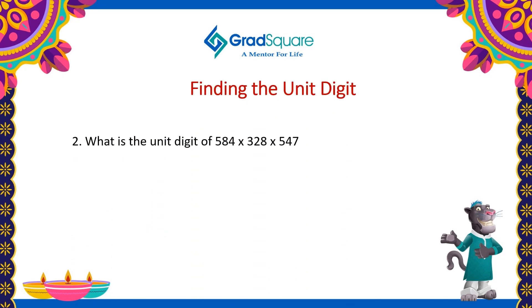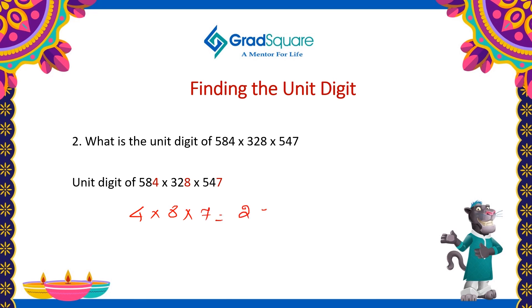Now, in this example, the unit digit of all the participating numbers are 4, 8 and 7. The product of 4, 8 and 7 will be 224. So the resultant will have 4 as the unit digit.